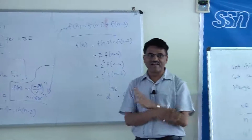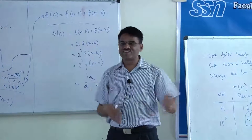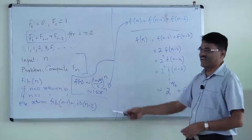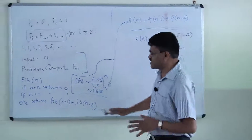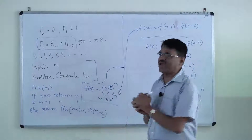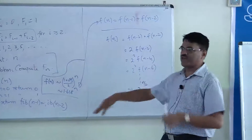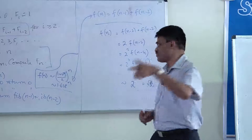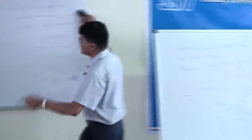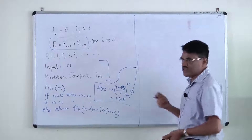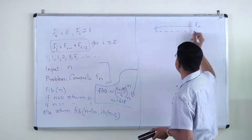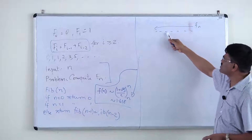Define p(j) as the largest index i less than j such that job i is compatible with job j. For example, p(8) = 5 because jobs 6, 7 overlap with 8, but job 5 does not. If I include job j+1 in my solution, I can only use jobs up to p(j+1). So the recurrence becomes: opt(j) = max of [opt(j-1)] and [v(j) + opt(p(j))], where v(j) is the value of job j.